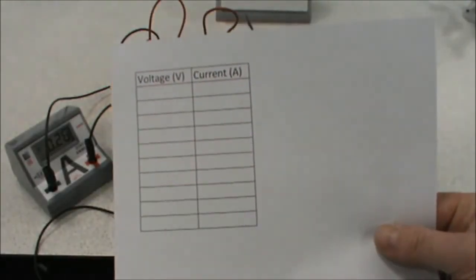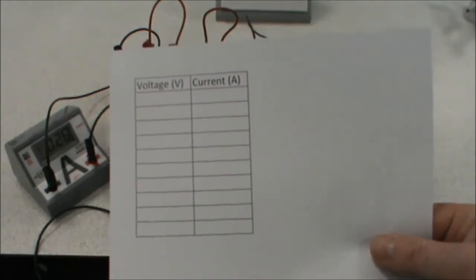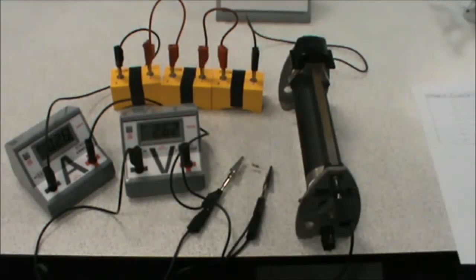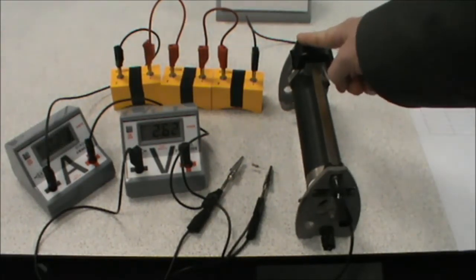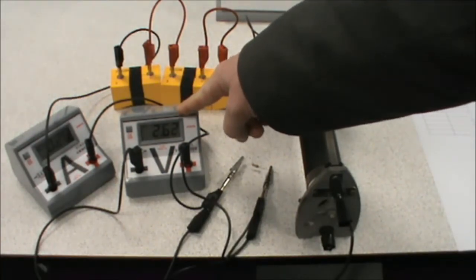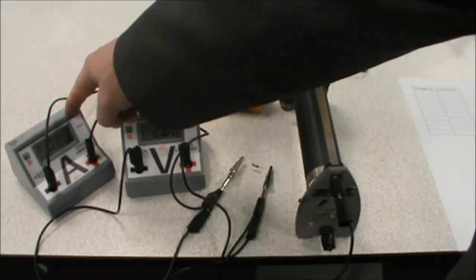We're going to start off by recording our voltage and our current readings in a table like this. This is also downloadable from my webshop. So our first voltage and current reading: we've got our variable resistor set right to one end. We have a voltage of 2.62 volts and a current of 0.27.